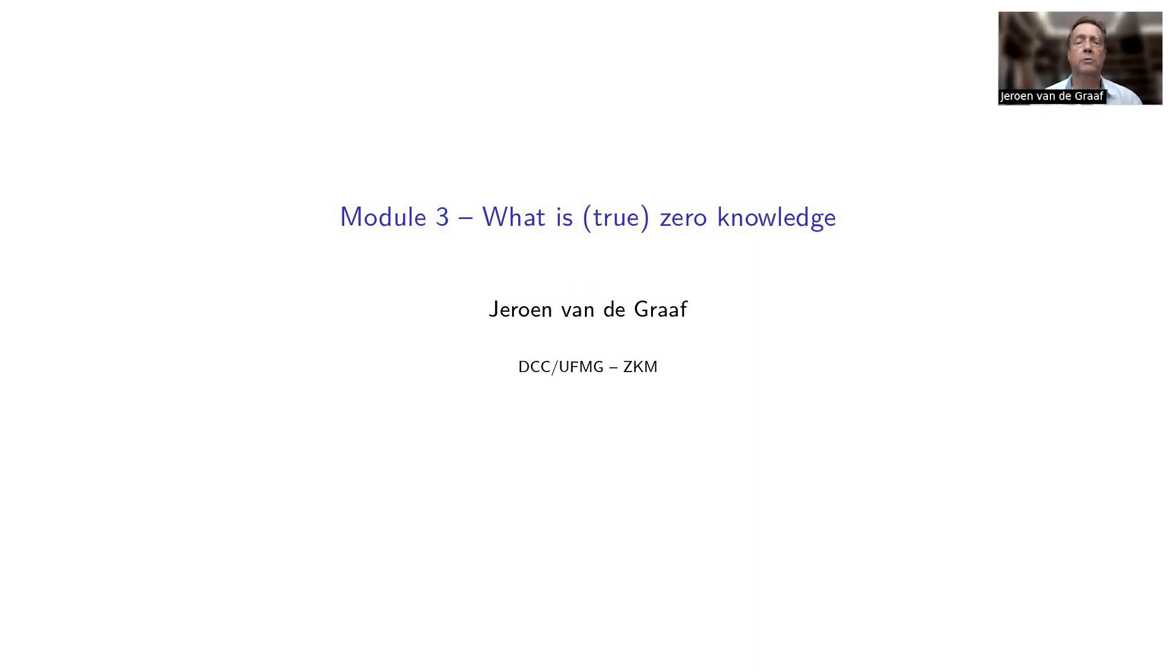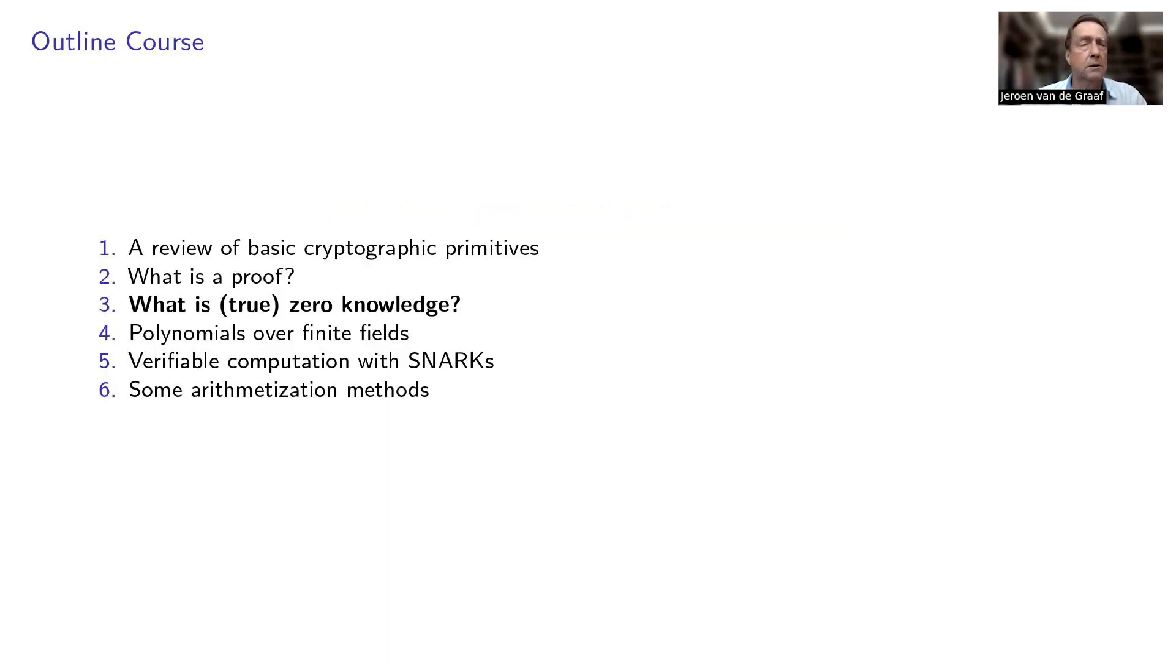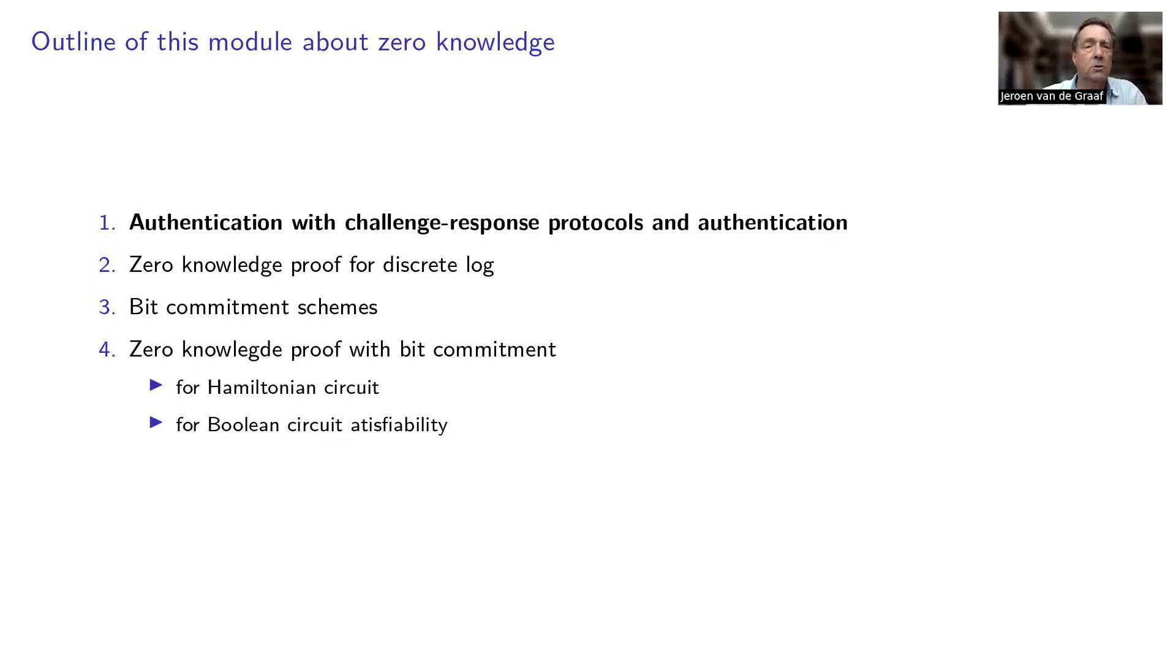Welcome to Module 3 of our course. The topic of today's lecture is about zero knowledge. This is the outline of the course. We have seen already a review of basic cryptographic primitives. Last module was about what is a proof. Today I will talk about what is true zero knowledge, the other topics are lying ahead, and today's course